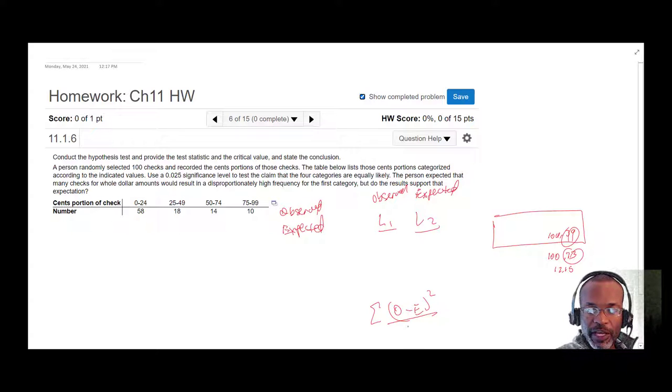Squared, divided by the expected values, and come up with a test statistic. Our calculator is going to help us generate that test statistic. When we get that test statistic, we're going to compare that value to a certain critical value.